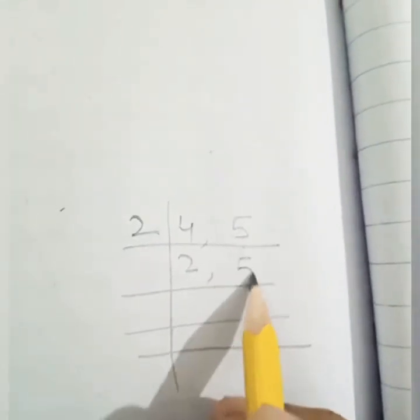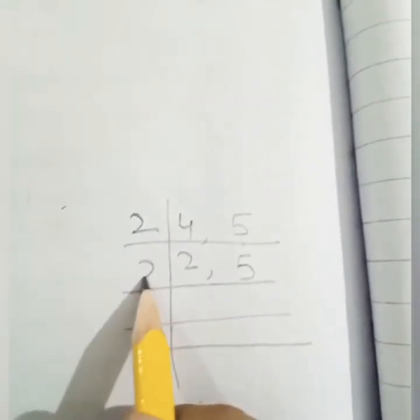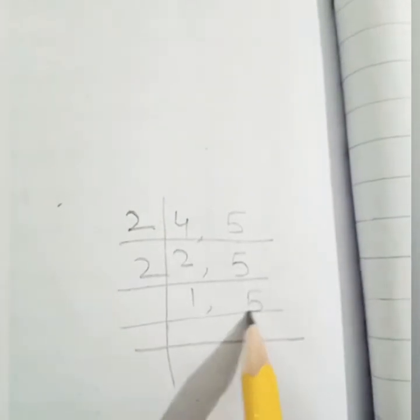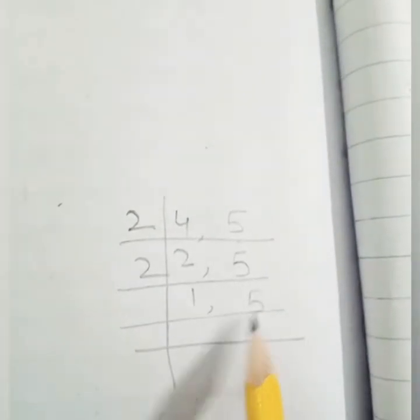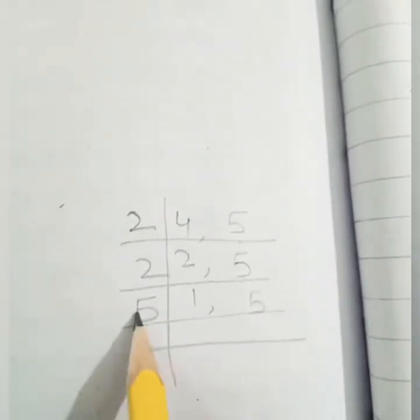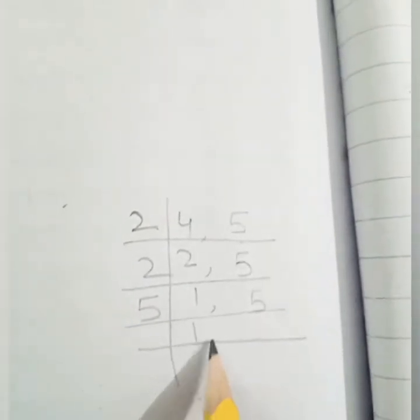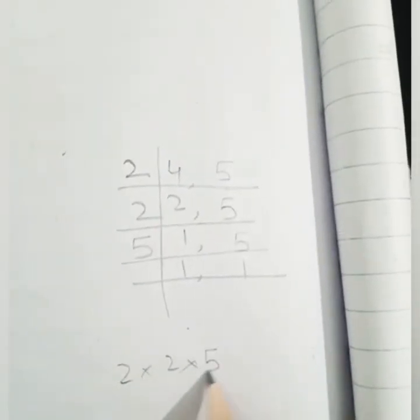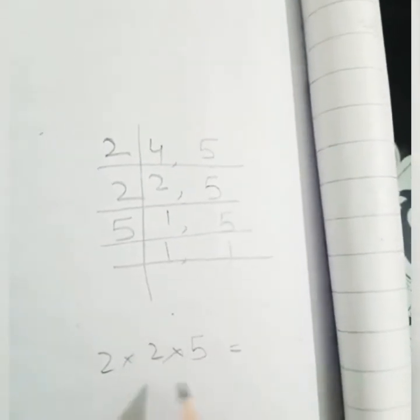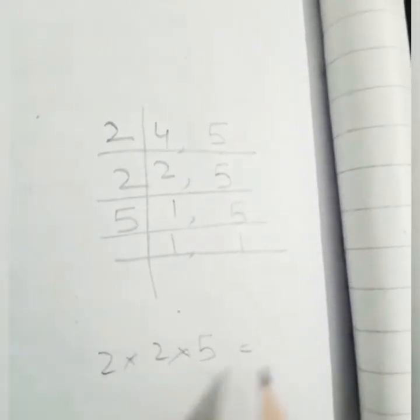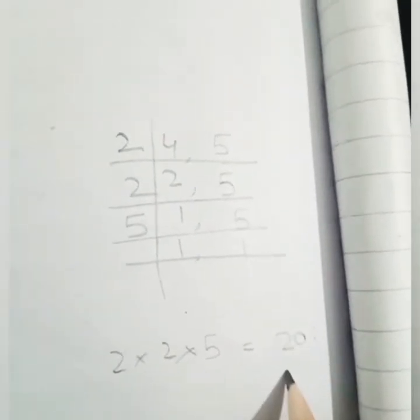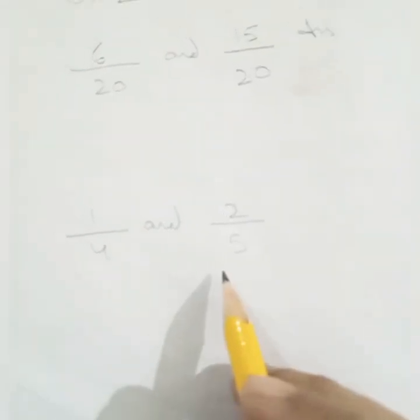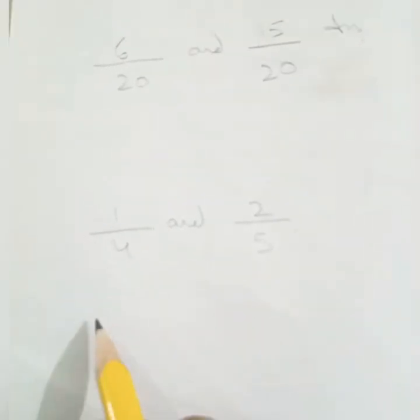Taking the LCM of four and five: start with two — two twos are four, five comes as it is. Again two — two ones are two, five comes as it is. Now five is a prime number — five one is five, five one is five. So LCM is two times two times five: two twos are four, four fives are twenty. The common denominator is twenty.